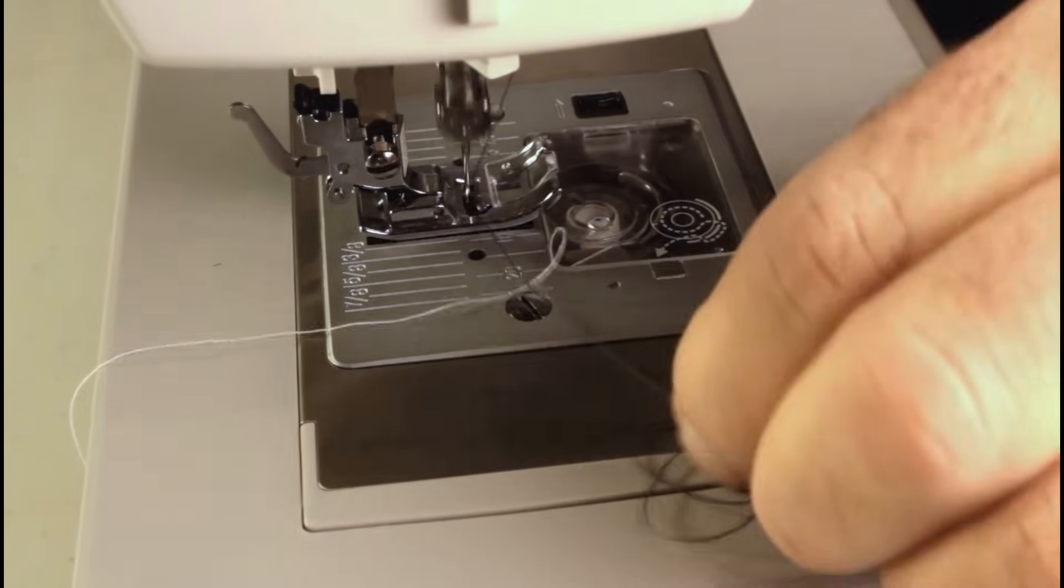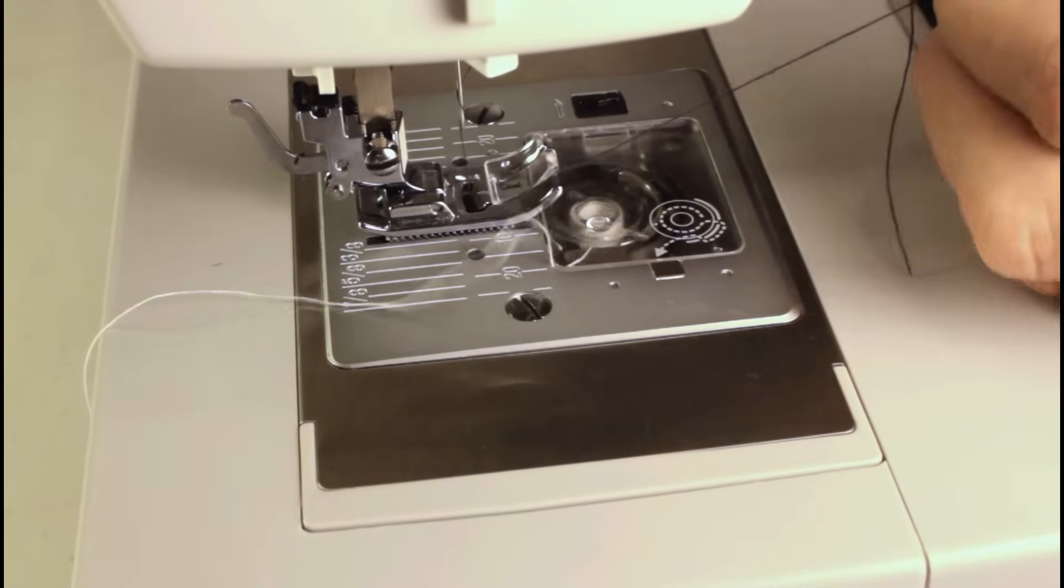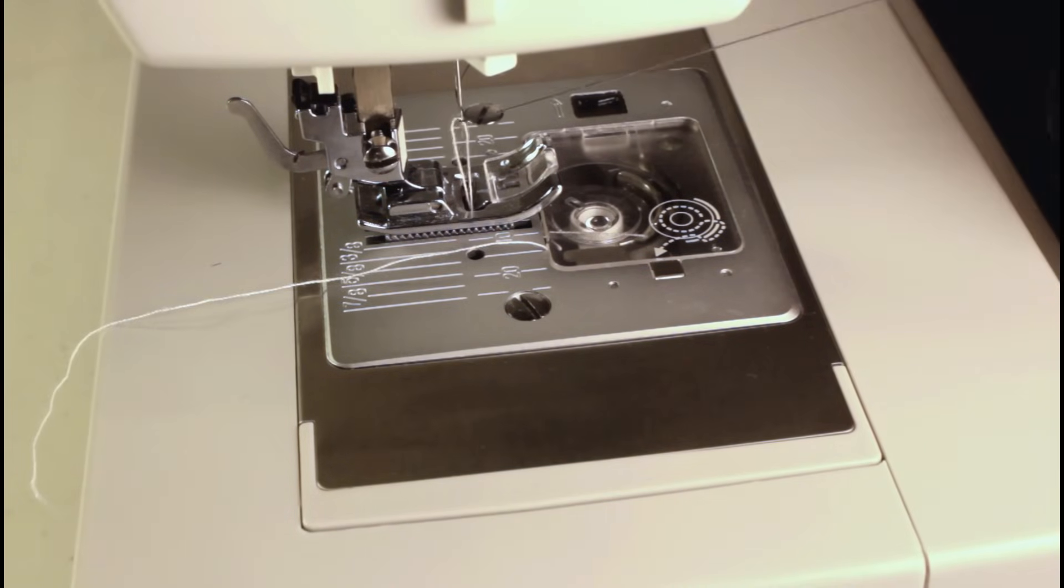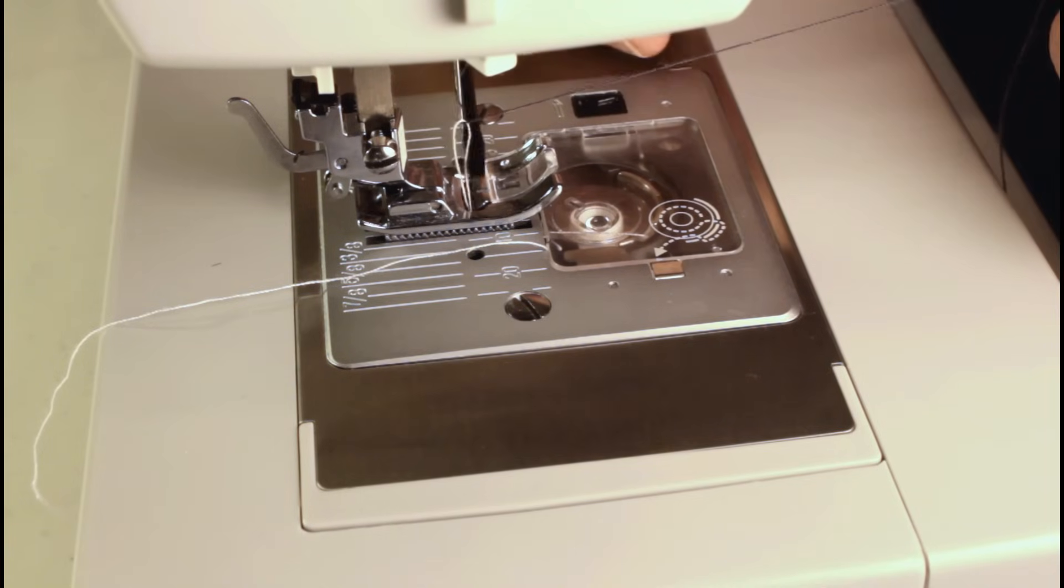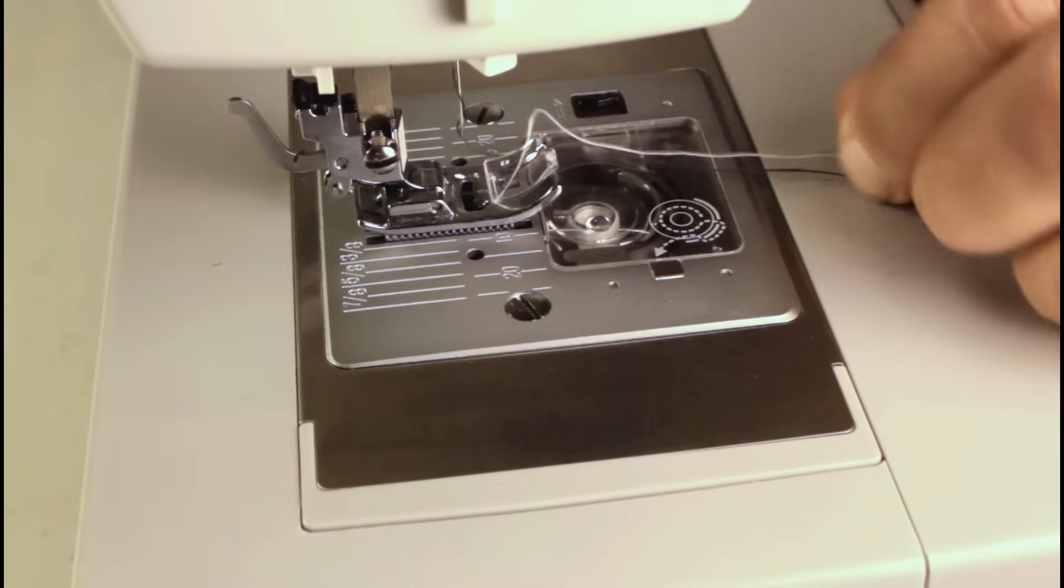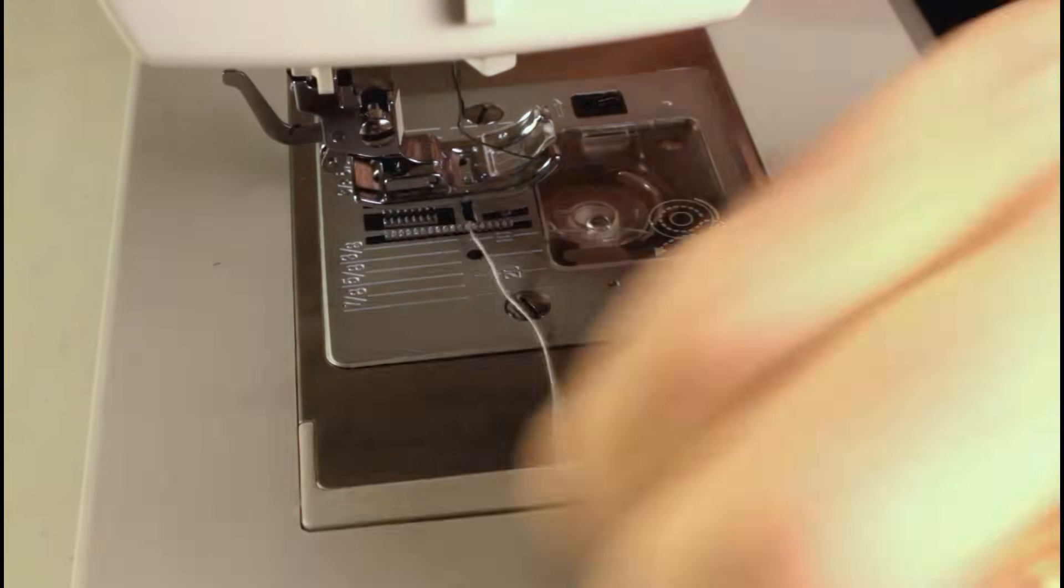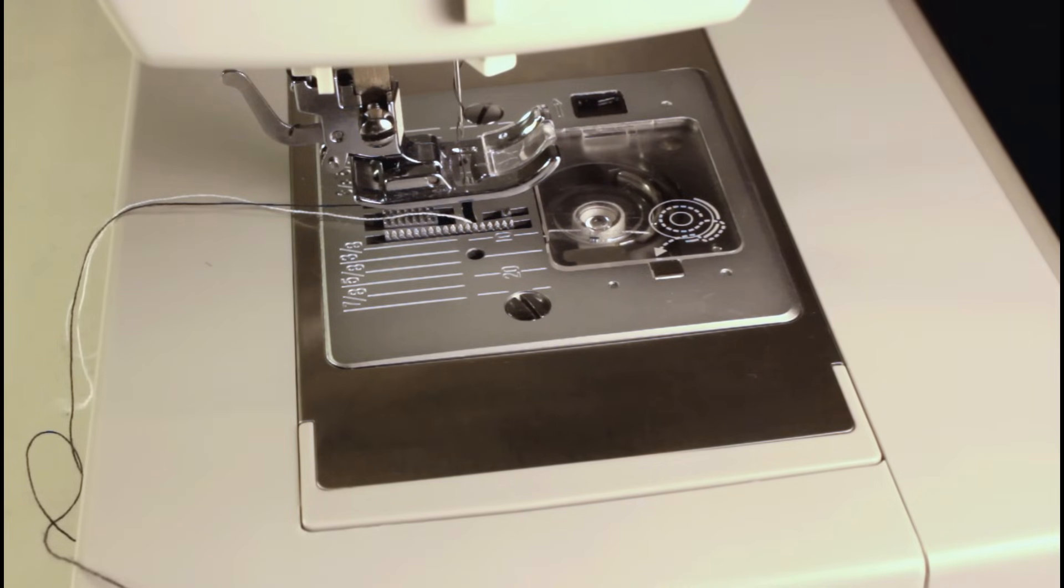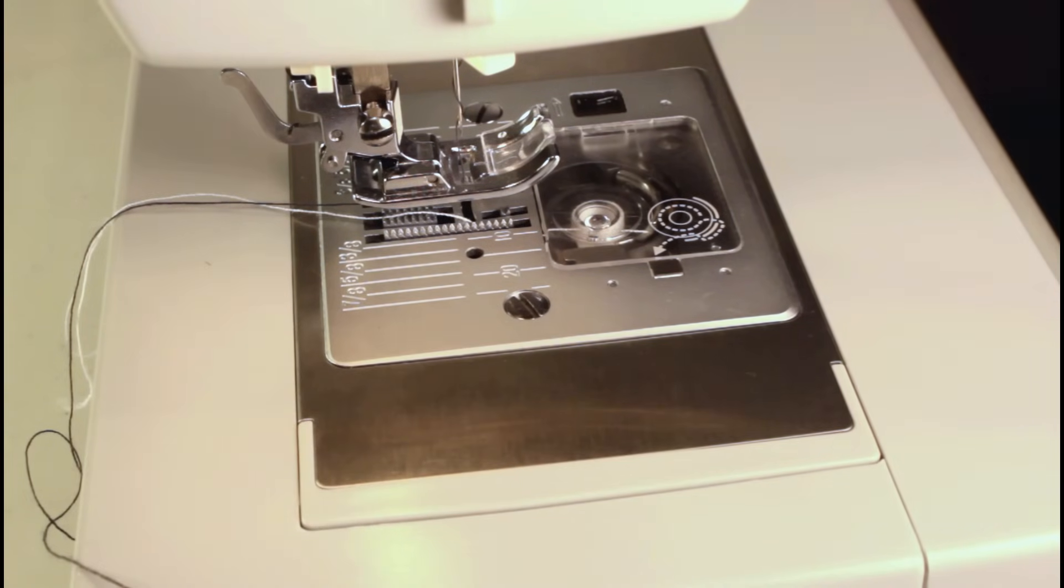Okay. Get my bobbin thread pulled up. There she is. We've got gray on the top and I've got light on the bottom. Put my presser foot down. Turn the machine on.